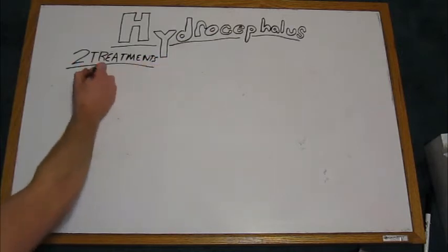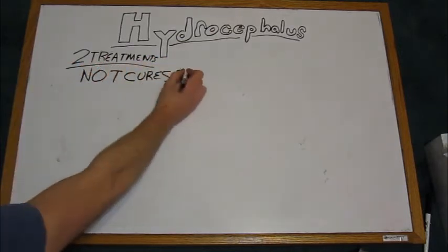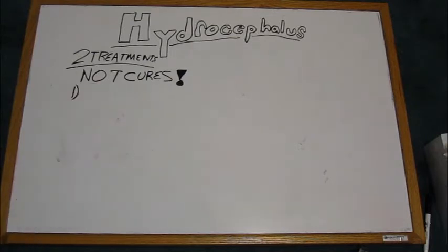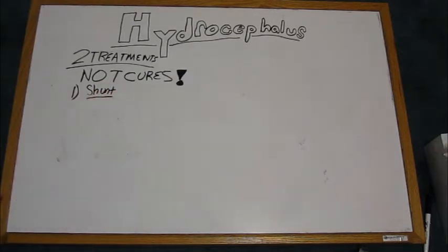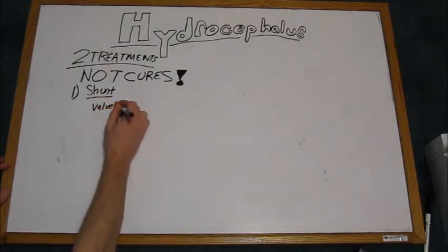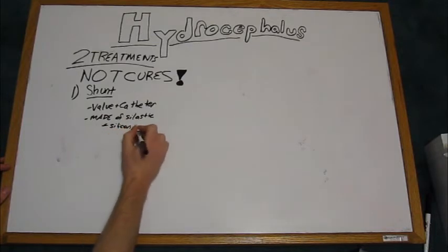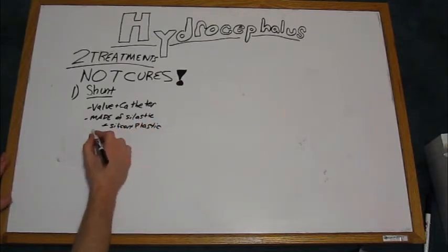There are currently two treatments, although they are not cures. The first and more common treatment is the shunt, which is a device consisting of a silastic catheter and a valve. Silastic is a combination of plastic and silicone and is used because plastic would break apart too easily.